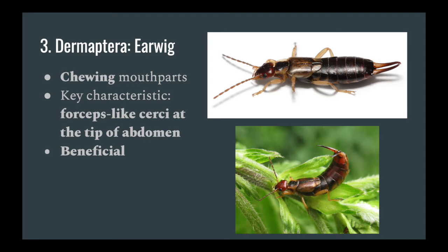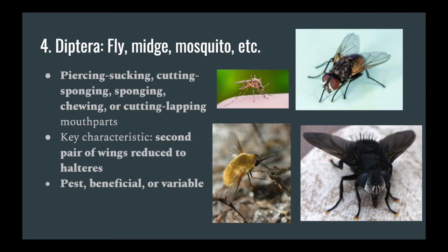The order of flies, midges, and mosquitoes — Diptera. The second pair of wings will always be reduced to halteres, and because of this it will often look like they only have one set of wings. However, when you look closely, the halteres look like little underdeveloped sticks coming right up behind the second pair of wings.